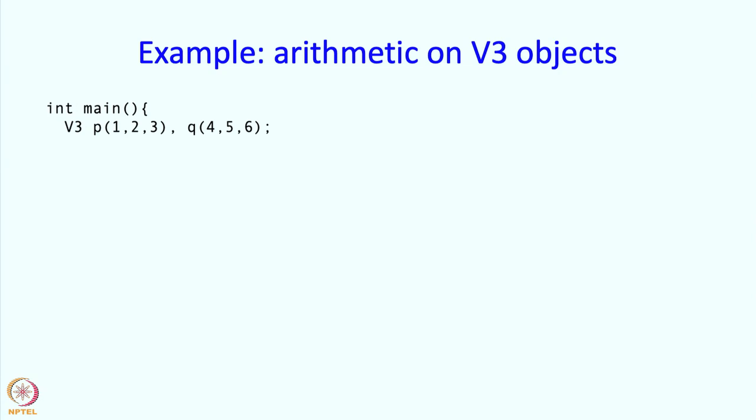Say we want to do arithmetic on v3 objects. So this is our main. So we have v3 objects p and q and they have been called with these constructors. So we will see those constructors as well in a minute. But let us say we have initialized those objects p and q somehow or the other.